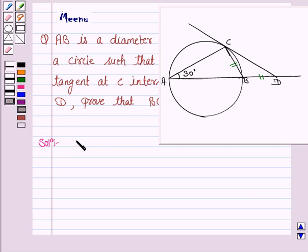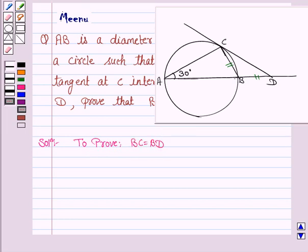What we have to prove? We have to prove that BC is equal to BD and we are given that angle BAC is 30 degrees.